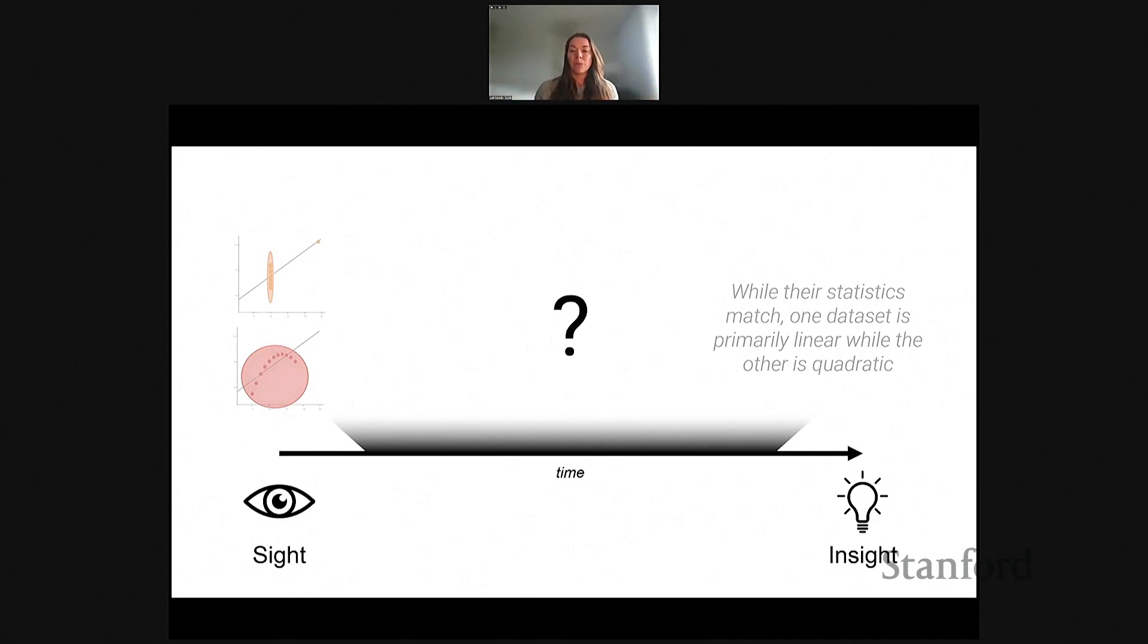But how do we get from our sense of sight to insight, from structures and patterns to knowledge? What is going on in between? I want to argue that by understanding the perceptual and cognitive processes between sight and insight, we can start to understand how the ways we visualize data determine the knowledge that people can infer from that data. My work models how people generate knowledge from visualization and uses these models to create new tools and techniques for analyzing data.